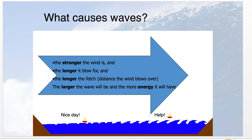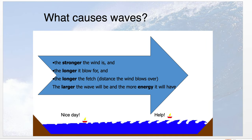Waves are made by the wind blowing. The stronger the wind, the longer it blows, the further the distance — the longer the fetch — the larger the wave will be and the more energy it will have. Waves also change as they approach the shore. Waves break when they approach the shore; they don't break in the middle of the sea unless it suddenly becomes shallow. It's these breaking waves that either add or take sediment away from the beach or coast.